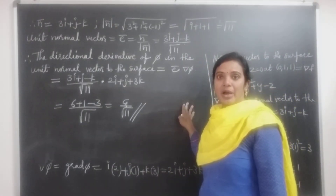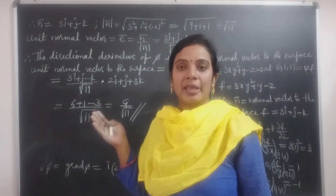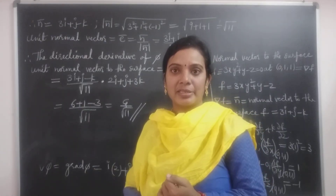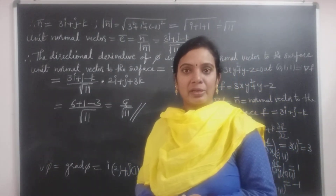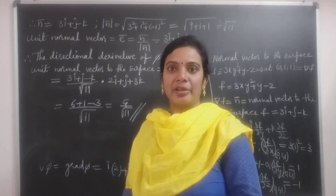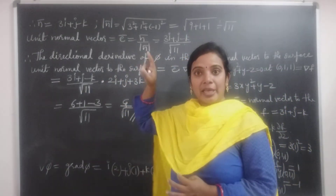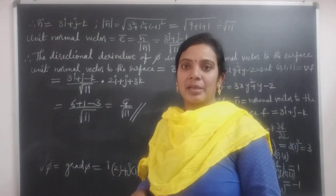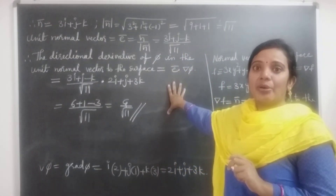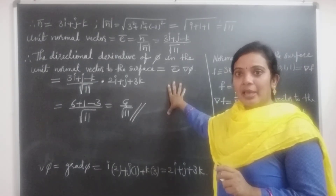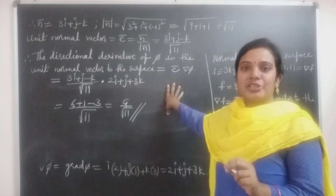This is the procedure for finding the directional derivative belonging to the third case. In the first case, the direction vector is directly given. In the second case, the direction is along the line joining two points P and Q. In the third case, the direction is the normal to the given surface. Remember these three cases. Thank you — if you like this video, please subscribe to my channel and share with your friends.